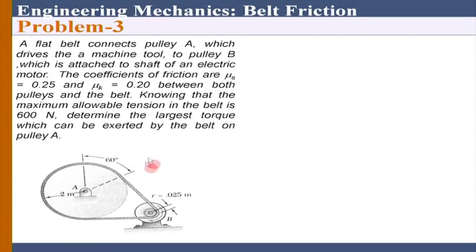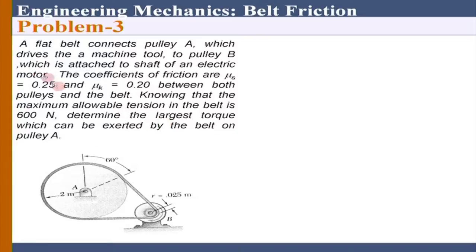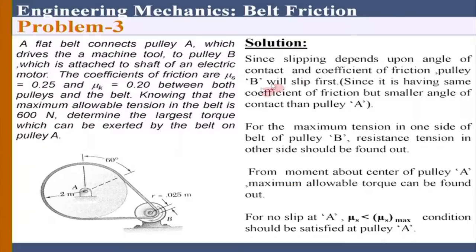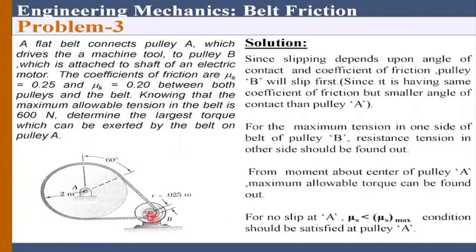With that you can quickly solve a problem. A flat belt connects pulley A which drives a machine tool - there is a machine tool connected here and a motor which is the driver drum. We are interested in determining the largest torque which can be exerted by the belt on pulley A. As I said, it is very simple - first we find out where the impending slip will happen. We already know which side has the higher tension.